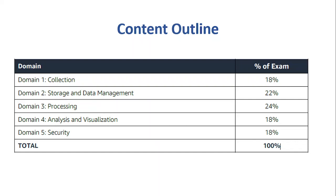The last thing I want to go over are the exam domains, which are defined in the exam guide — I'm going to attach the link to the exam guide in the video, please check it. Looking at the content outline, the first domain is Collection, which makes up 18% of the exam. It covers determining the operational characteristics of the collection system and the ability to handle certain frequency of data, source types, and processing. The next domain is Storage and Data Management, which makes up 22% of the exam. It covers determining the operational characteristics of storage solutions for analytics, such as S3, Redshift, DynamoDB, Elasticsearch, etc.